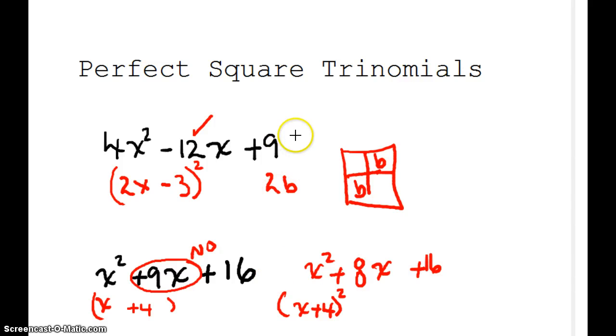Remember, if you cannot do the shortcut, you can always revert back to your B, A, C. So if we forgot, we could always say, I'm multiplying to 36 and I'm adding to negative 12. Negative 6 times negative 6. I go through all my grouping, and I'll end up with 2x minus 3 squared.